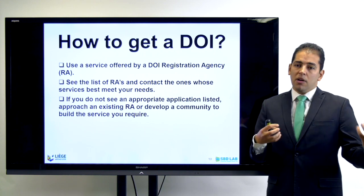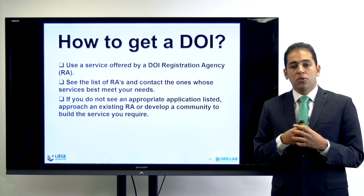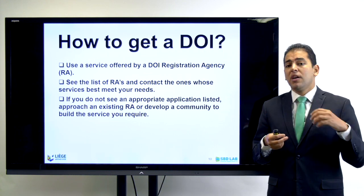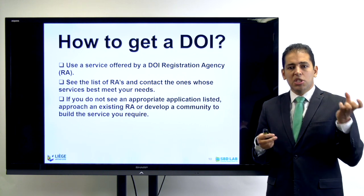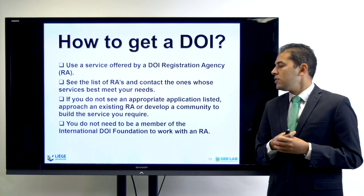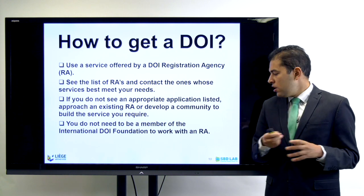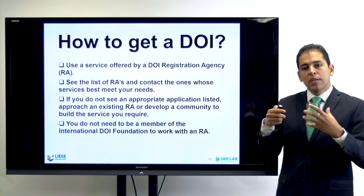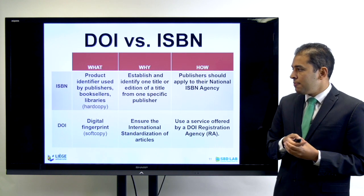If not, you can ask your university librarian for a DOI if they are registered and offering it. If they are not, you need an agency that issues them and most probably you will pay for that. You do not need to be a member of the International DOI Foundation to work with a registration agency — you just need to pay them if they charge, and if it is a university, most probably it will be free.